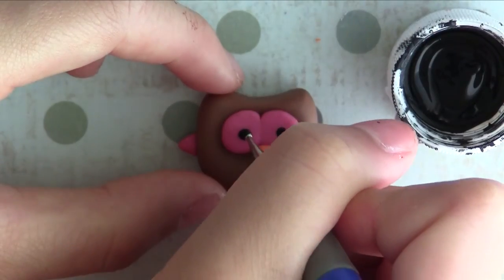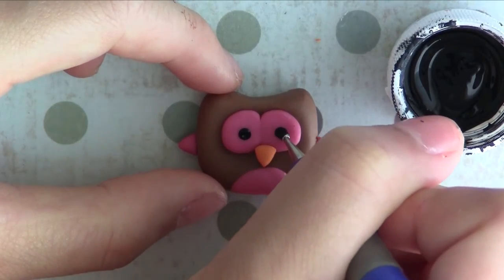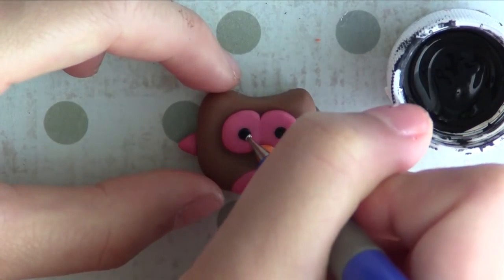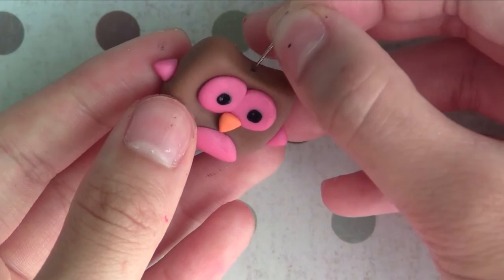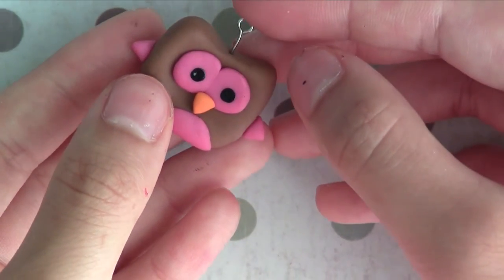If you want to turn this into a charm, you can add an eye pin. I like to set my cold porcelain creations on parchment paper and I just leave it there for a day or two until it's dried and that's basically it.